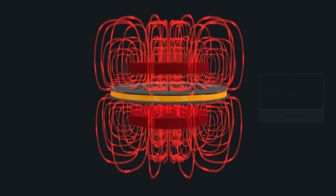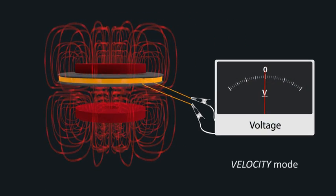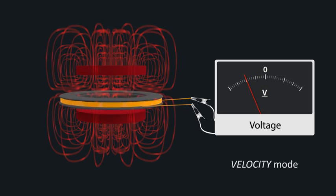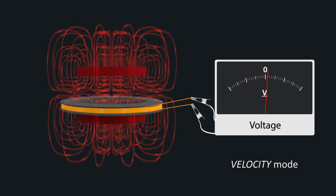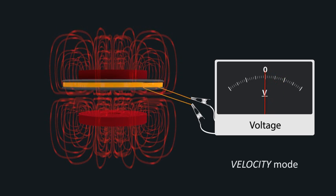The first, called velocity mode, uses an electric motor to move the coil through the magnetic field at a constant velocity. This movement induces a voltage in the coil that is exactly proportional to the field strength. Measuring the voltage indicates the field strength.